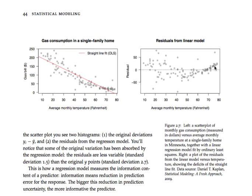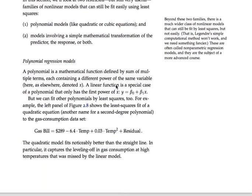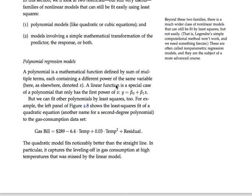We've clearly failed to take the systematic trend in the gas bill and adjust it effectively for average monthly temperature, because there's clearly a nonlinear function going on. As temperature rises the gas bill goes down, but at a decelerating rate. A much better way to handle this is to fit a polynomial regression. A straight line is a first degree polynomial, but if we add a second power — a quadratic term in temperature — we get a quadratic regression model.